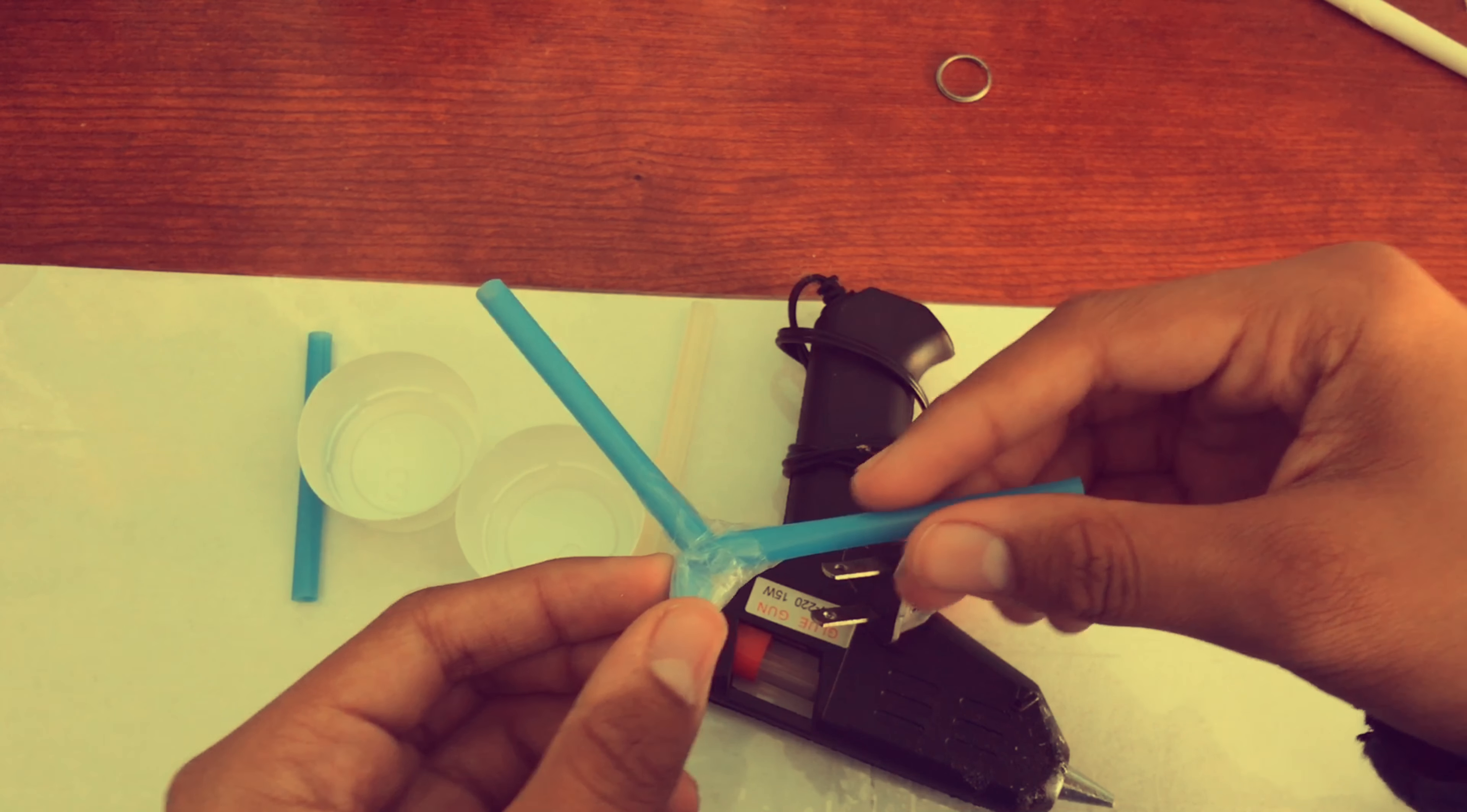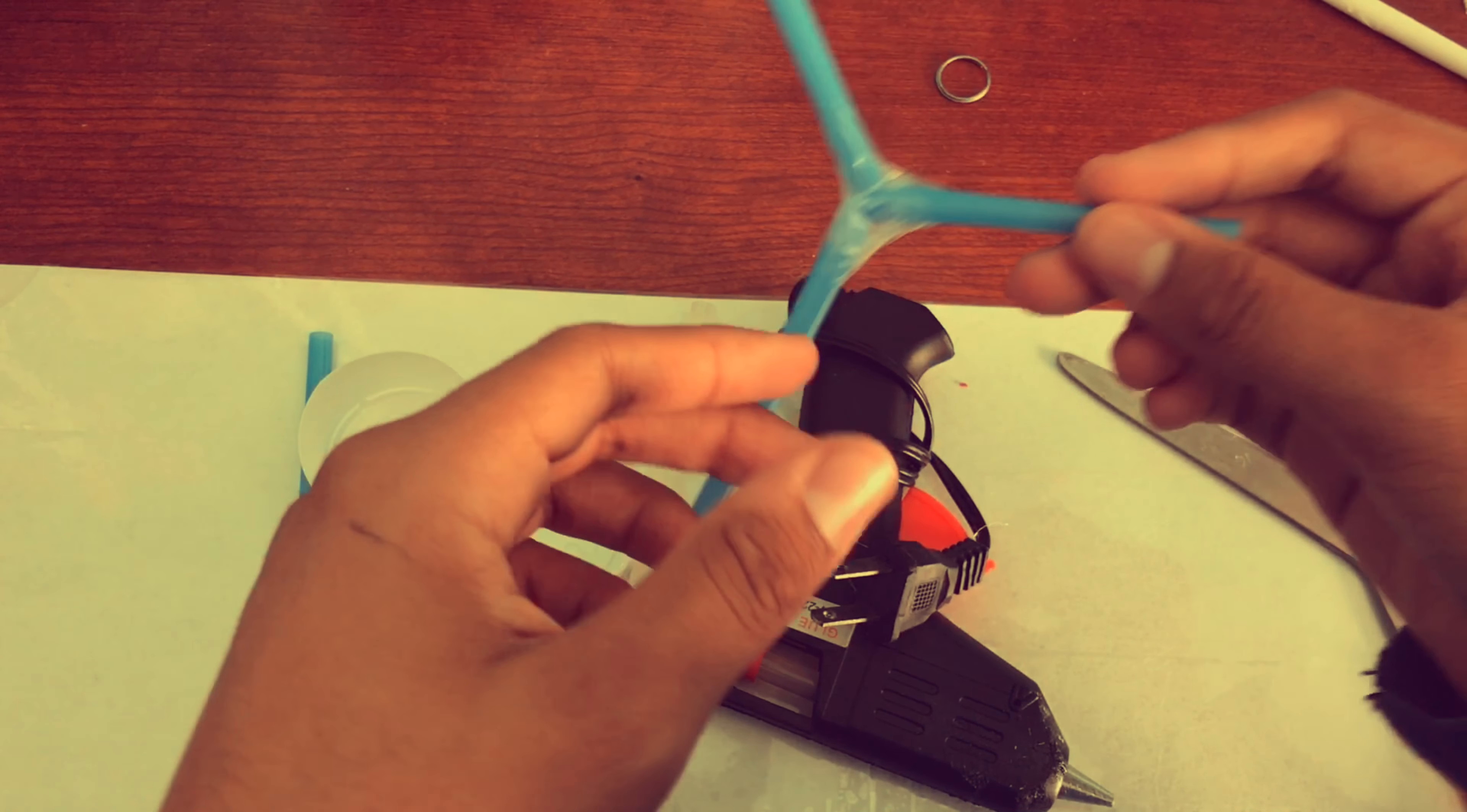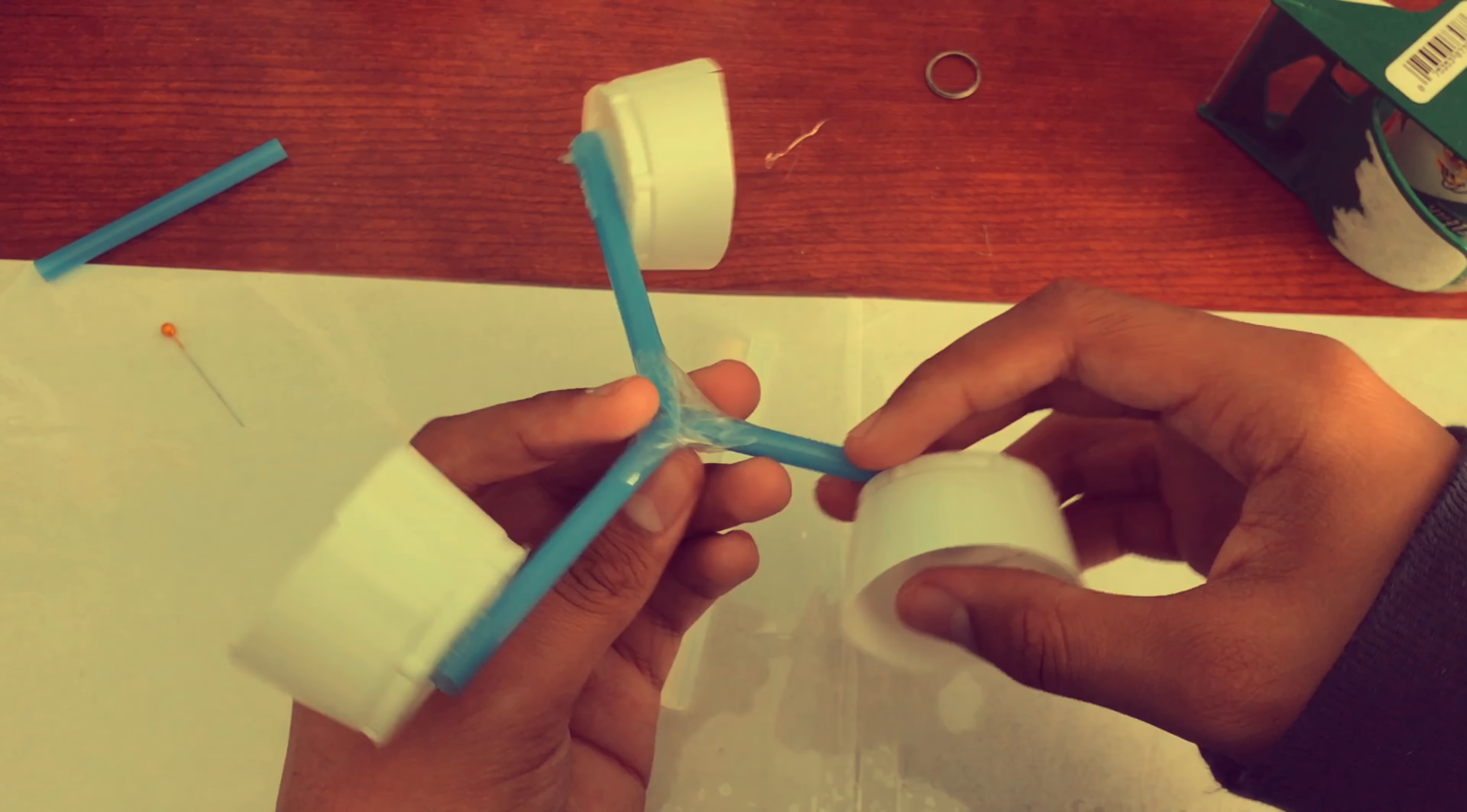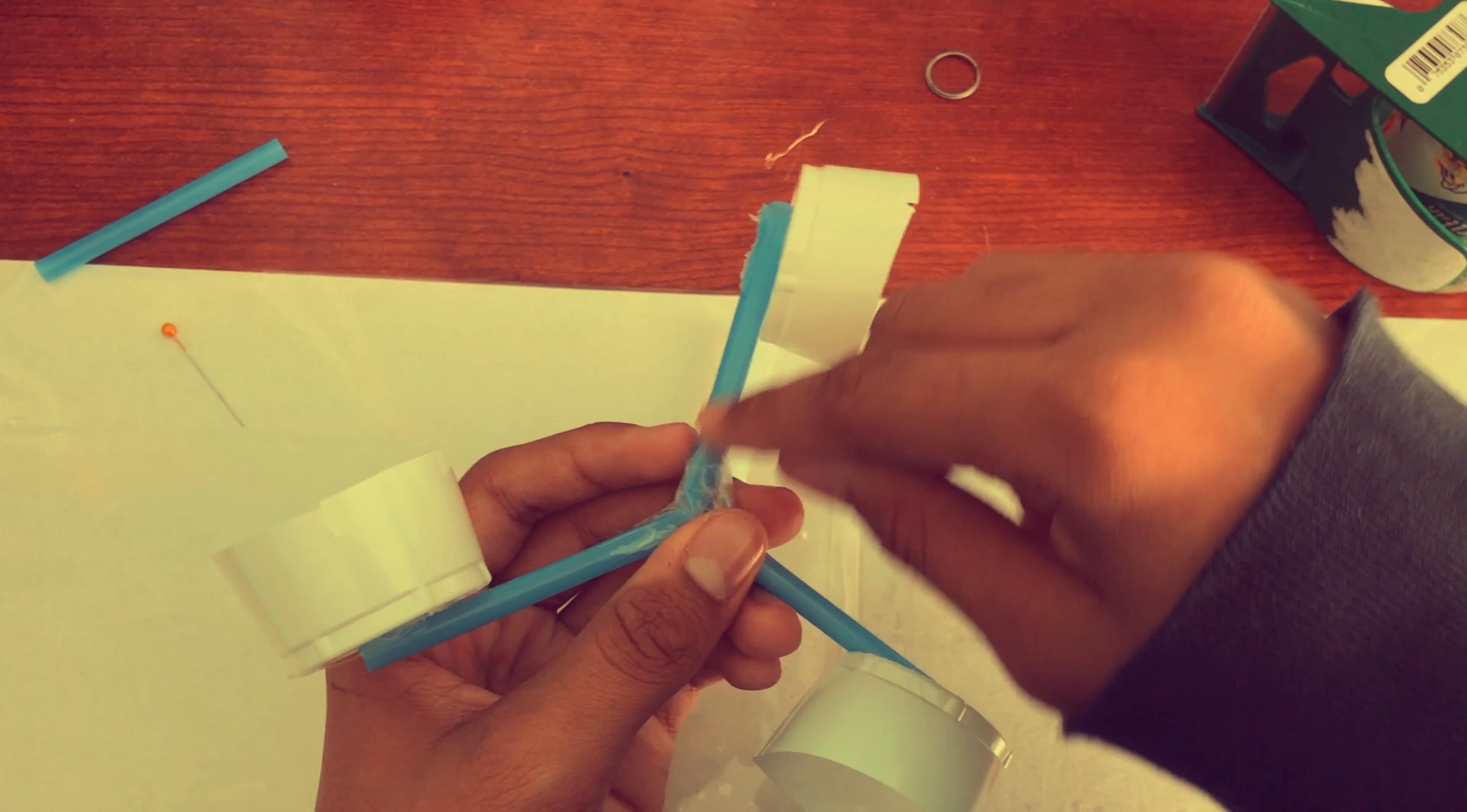So now basically what we're gonna do is we're gonna try and apply all these three cups to each of these edges. And now we're gonna need our glue gun to do this. Okay, so now I got all three of the cups connected. And as you can see, you can pause this if you please.